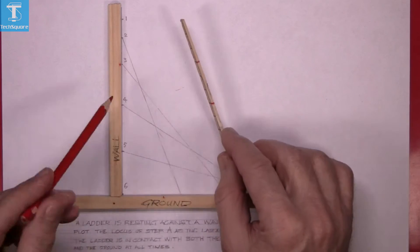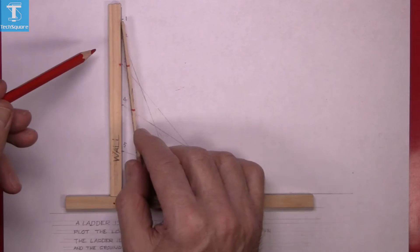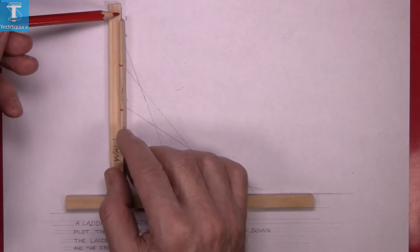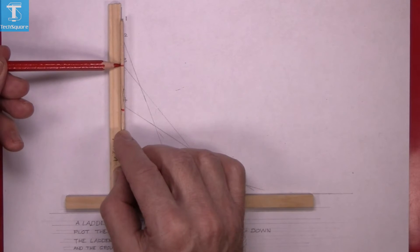What I've done here is I've marked six positions along the wall for the ladder. So when the ladder is in a vertical position, the top of the ladder is at position one and step A is there.